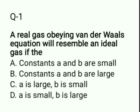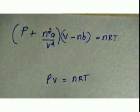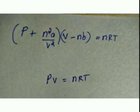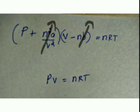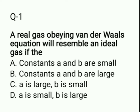Look at the solution. This is the van der Waals equation: (P + n²a/V²)(V − nB) = nRT. Here, a and B are van der Waals constants — a represents molecular interaction, B represents molecular size. If a and B tend to zero (very small), these terms diminish and the equation reduces to PV = nRT. So the correct answer is option A: constants a and B are small.